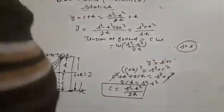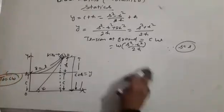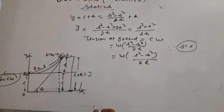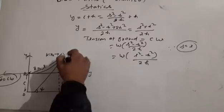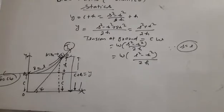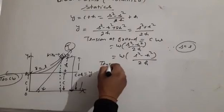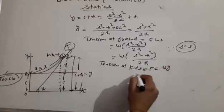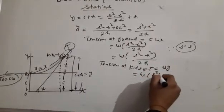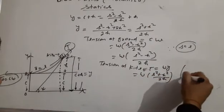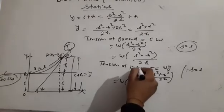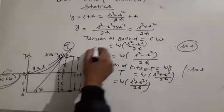S equal to L, the length of wire. Tension at kite: T equal to WY. Putting Y value, T equals W(L square plus H square) upon 2H. This is the terminal tension.